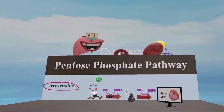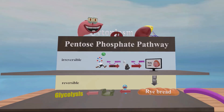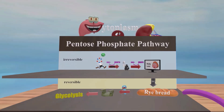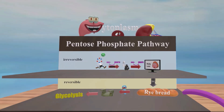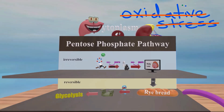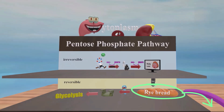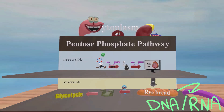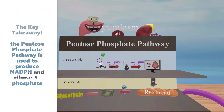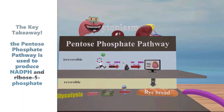The pathway has two stages: the irreversible oxidative phase and the reversible non-oxidative phase. The pentose phosphate pathway produces two things: NADPH and ribose-5-phosphate. NADPH is produced during the first irreversible phase and is used for fatty acid synthesis, steroid synthesis, and to prevent oxidative stress. Ribose-5-phosphate is produced during the second reversible phase and is used to make pyrimidines and purines for DNA and RNA.